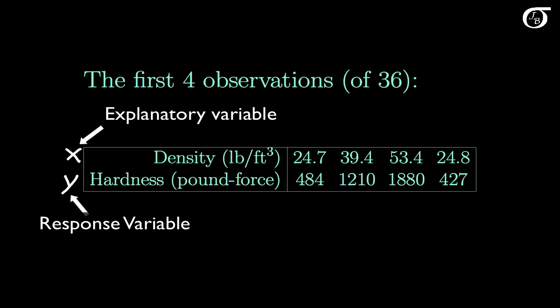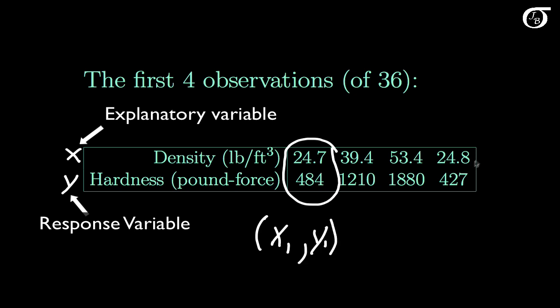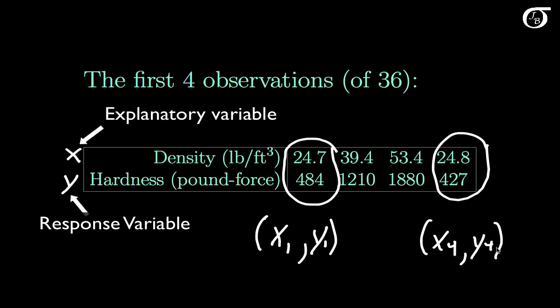So the data set consists of 36 X, Y pairs. Each pair is a set of measurements on the same type of tree. We have our X1, Y1 pair there, and over here this is our X4, Y4 pair, and there are 36 observations in total.